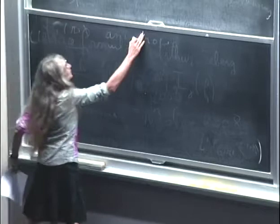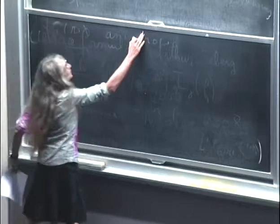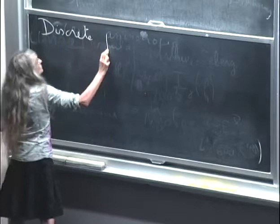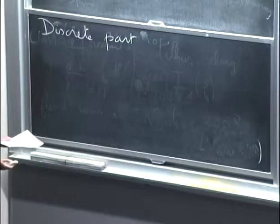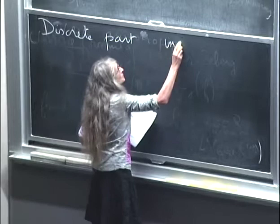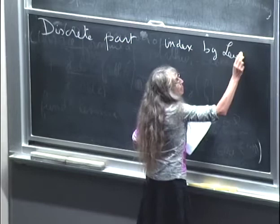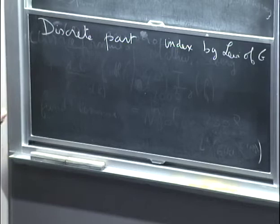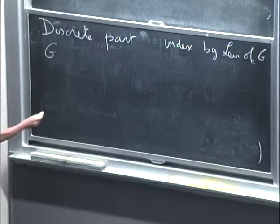The spectral side has a discrete part, which is relatively easy to describe, and it has the advantage of being spontaneously invariant. The discrete part is indexed by Levi subgroups of parabolic subgroups of G — it is really G, not G tilde. I begin with the part which depends on G. This is easy: we look at the square integrable automorphic forms for G.